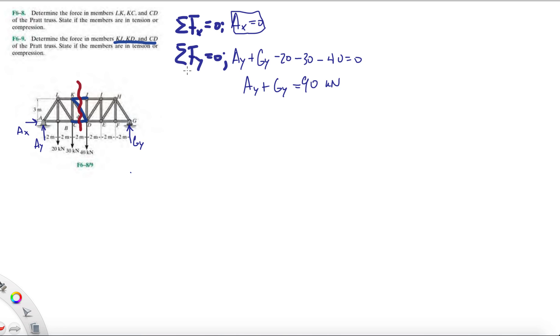In order to do that, best thing to do is just take a moment about A. You want to put your finger down on your paper and hold it at A, and then just find the direction of each moment. If you push down on B in that direction, it should make your whole page rotate clockwise, which is negative. GY will push it up and rotate it counterclockwise, which is positive.